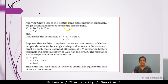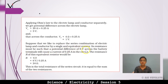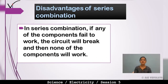Applying Ohm's law separately: potential difference across the electric lamp V1 = 20 × 0.25 = 5 volt; across the conductor V2 = 4 × 0.25 = 1 volt. If we replace the series combination with a single equivalent resistor, its resistance = 6V / 0.25A = 24 ohm. Thus the total resistance of the series circuit equals the sum of the two resistances.